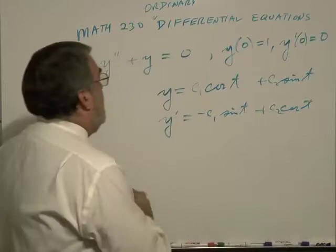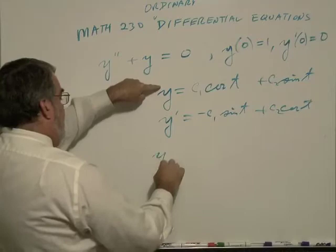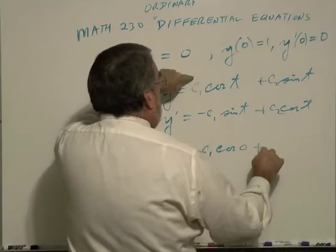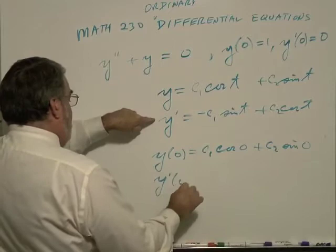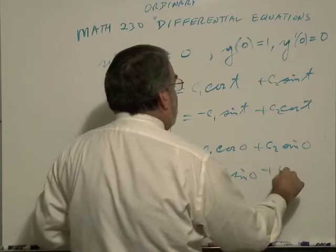I'm going to plug these initial conditions in here. So y, the first equation, y at zero, is c1 cosine of zero plus c2 sine of zero. And the second derivative, y prime of zero, is minus c1 sine of zero plus c2 cosine of zero.